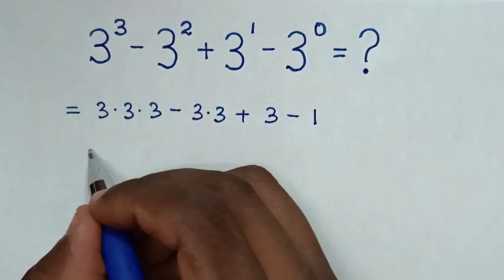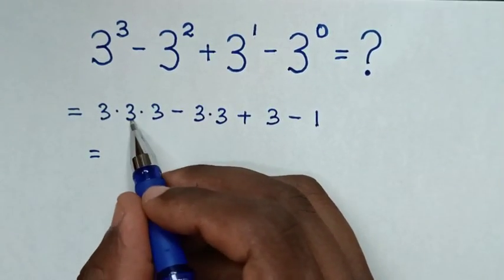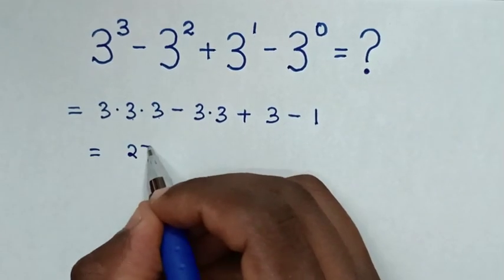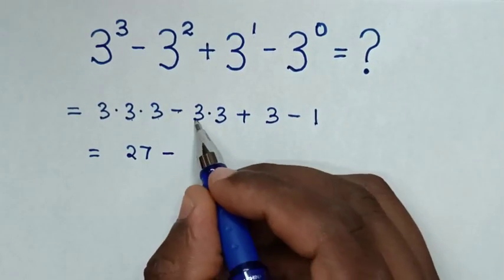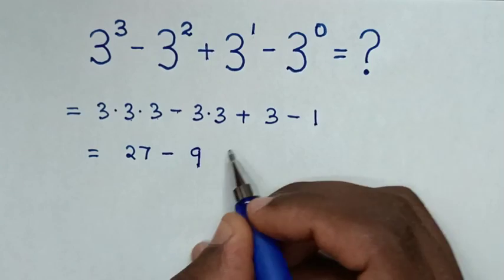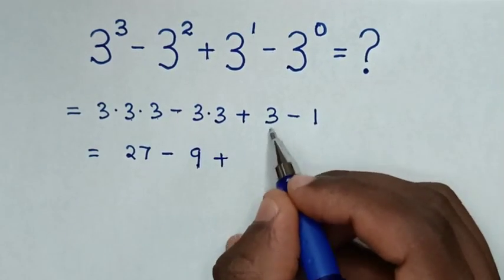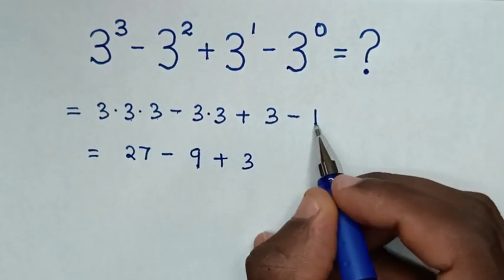Then it will be equal to 3 × 3 × 3, which is 27, minus 3 × 3, which is 9, plus 3, minus 1.